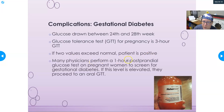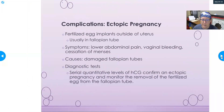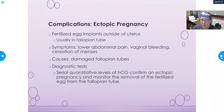Many physicians will perform a one-hour postprandial glucose test to screen for gestational diabetes. If that is elevated, then an oral glucose tolerance test is ordered. A one-hour postprandial glucose simply means measuring blood sugar one hour after eating — if it is still elevated at that point, gestational diabetes can be suspected.